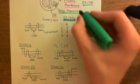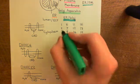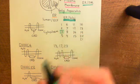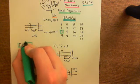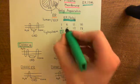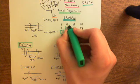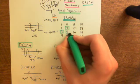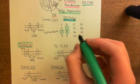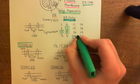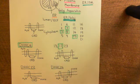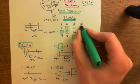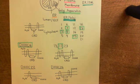Starting with the Golgi apparatus: DHHC3 is present solely in the Golgi apparatus membrane. DHHC4 is present solely in the Golgi apparatus membrane. DHHC7 is present solely in the Golgi apparatus membrane. DHHC8 is solely present in the Golgi apparatus membrane. Then also DHHC15, DHHC17, and DHHC18. All of these members now highlighted in green are solely found within the Golgi apparatus membrane.